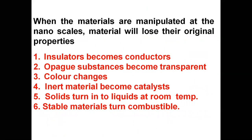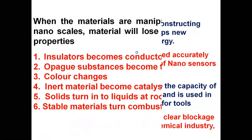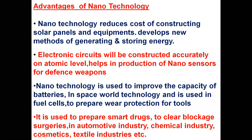When an object is manipulated to the nanoscale — when you rearrange its atoms to bring it to nanoscale — what will happen is materials lose their original properties and gain new ones. For example: an insulator may become a conductor, an opaque substance becomes transparent, color changes, an inert material becomes a catalyst, and a solid turns into liquid — very important. Nanotechnology can make a solid liquid at suitable temperature, and a stable material can become combustible.